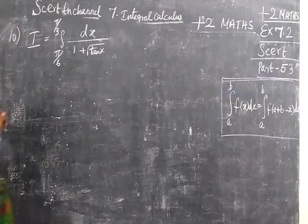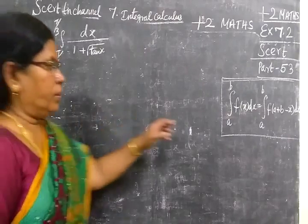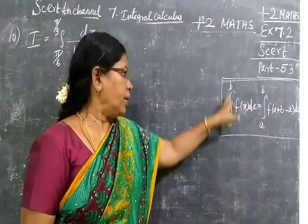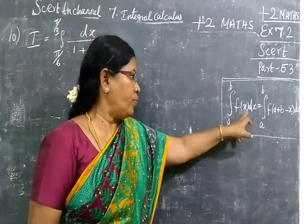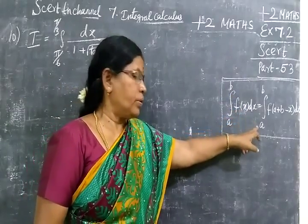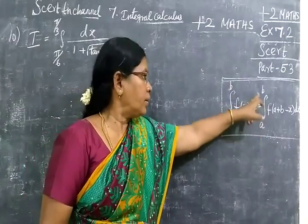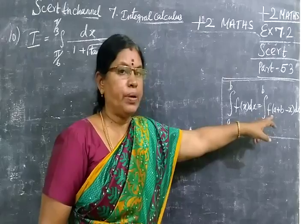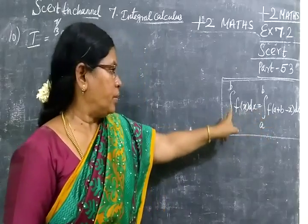Now, we see Part 53. Here, we see the integral property: integral a to b of f(x) dx equals integral a to b of f(a + b minus x) dx.